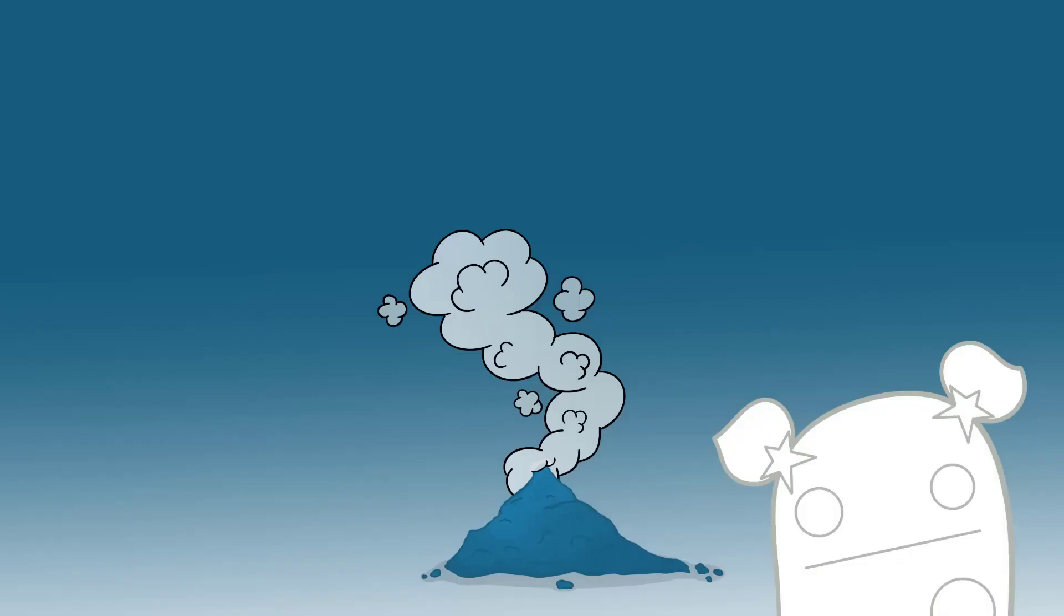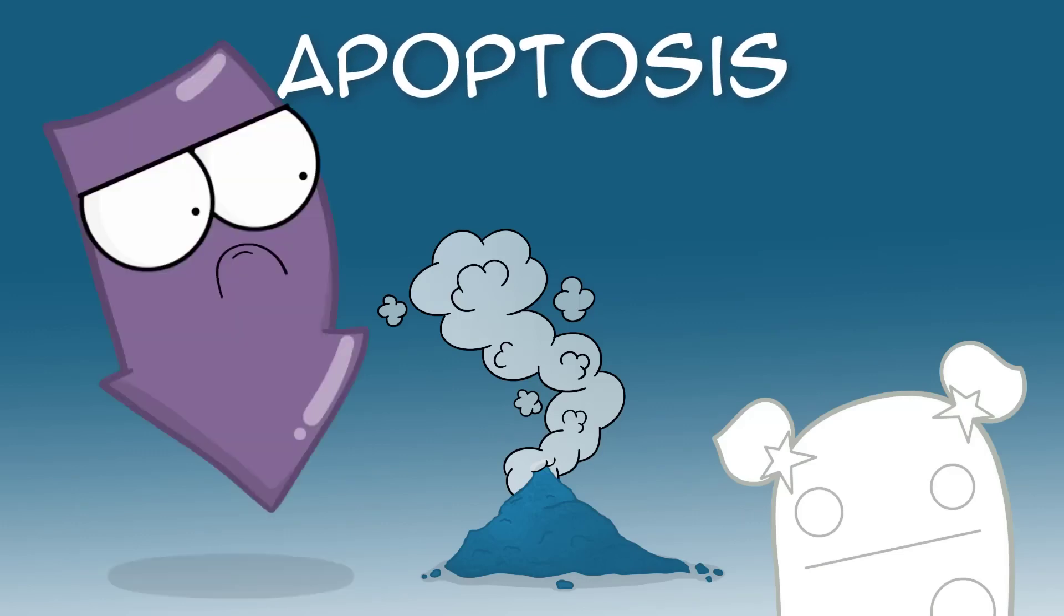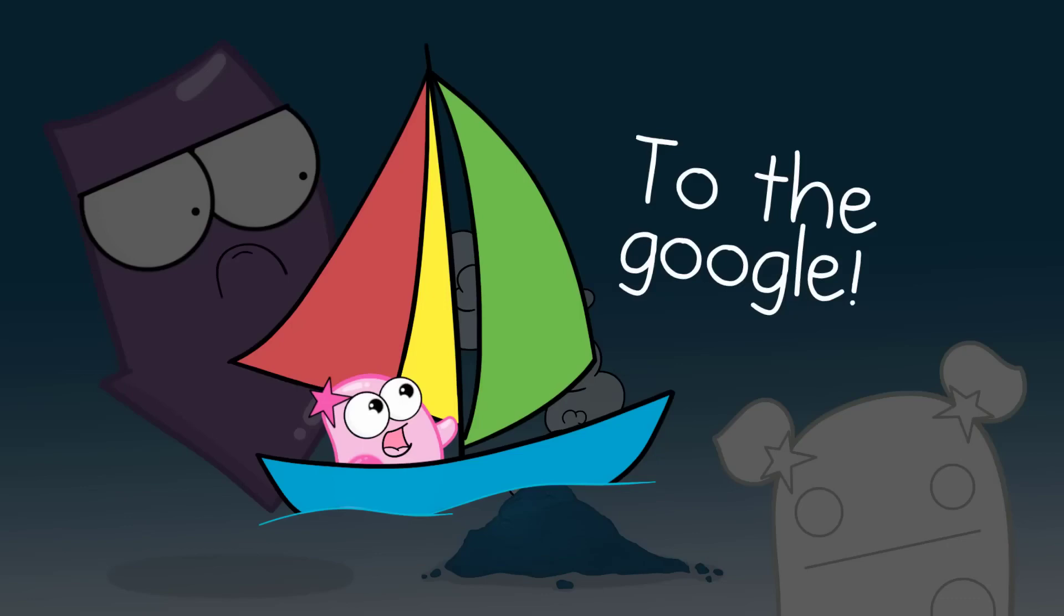Remember that vocabulary word we said, apoptosis? Proteins that are negative regulators—for example, a protein called p53—can be involved in initiating apoptosis. Again, we encourage you to explore beyond the video.